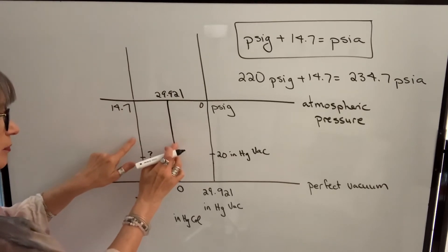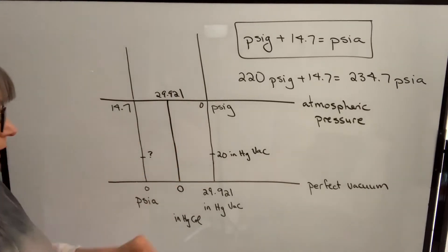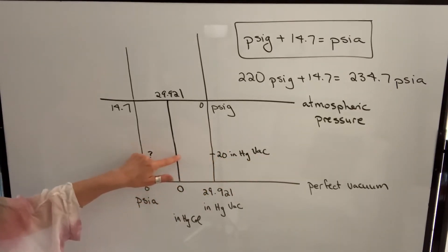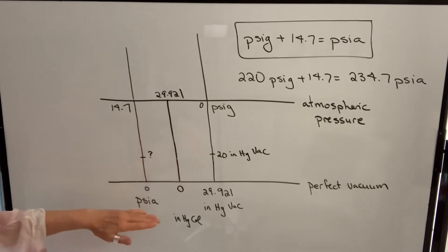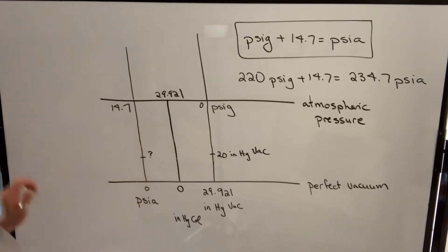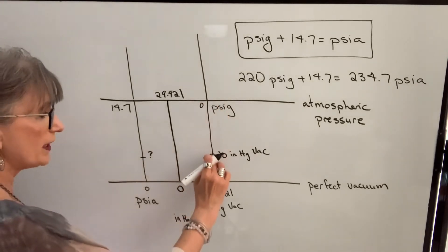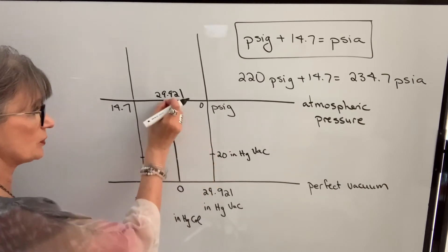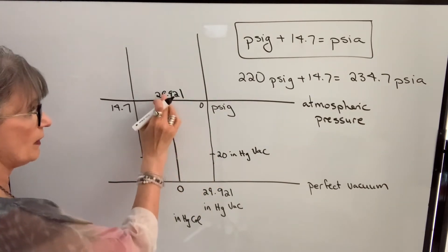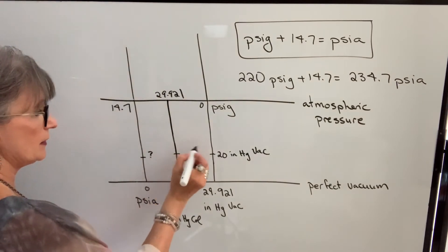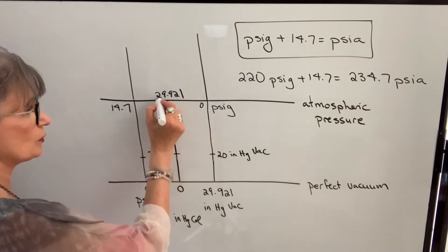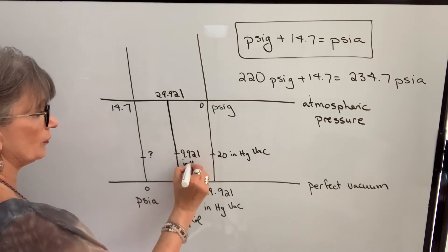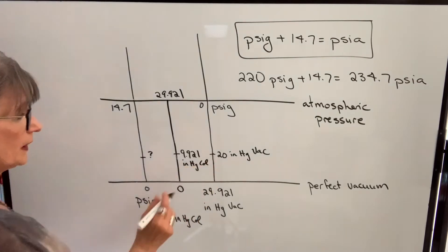Because inches mercury column starts at zero at the same place as PSIA and increases with higher pressure, we can set up a direct proportion between those two measurements. I need to first convert 20 inches mercury vacuum to inches mercury column. If I'm down 20 from the top, I subtract 20 from 29.921 and get 9.921 inches mercury column. These two values are equivalent.